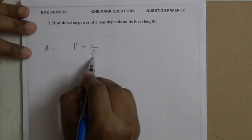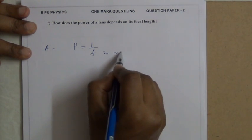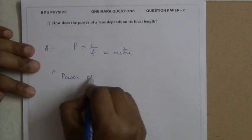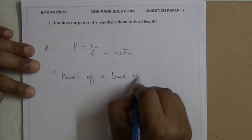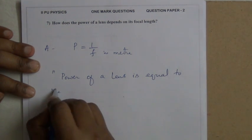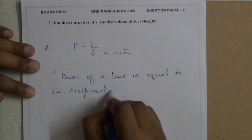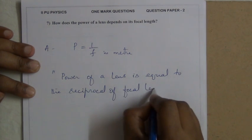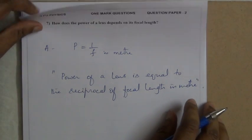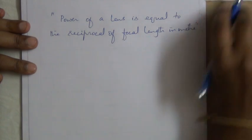How does the power of a lens depend on its focal length? Power equals the reciprocal of focal length, where focal length must be in meters. So the power of a lens is equal to the reciprocal of its focal length in meters. Make sure to use focal length in meters.